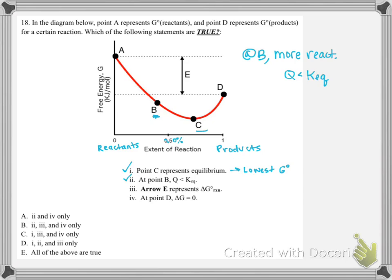Then we are looking at arrow E — that's delta G standard for the reaction. Delta G standard is just going to be the difference between products and reactants, and that's what our arrow corresponds to because point A is reactants and point D is products. The last option says at point D, delta G equals 0. We know that delta G nonstandard equals 0 if we are at equilibrium, and we already said point C corresponds to equilibrium. So point D is not where delta G equals 0 — that answer choice is false, leaving us with D as our answer.